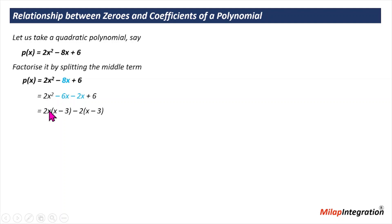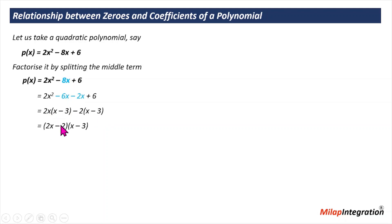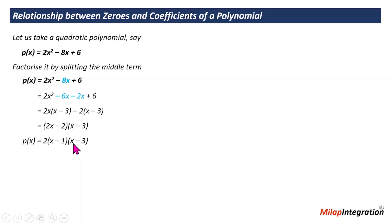So here we have 2x, x, minus 3, and because 3 times 2 is 6, we have minus 2 and x minus 3. Here x minus 3 and x minus 3 are common. So we can write 2x minus 2 and x minus 3. The three factors are: 2, x minus 1, and x minus 3.